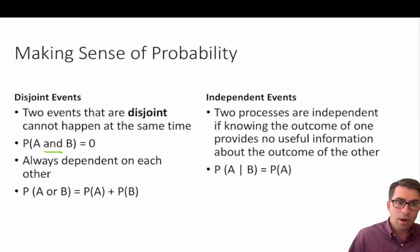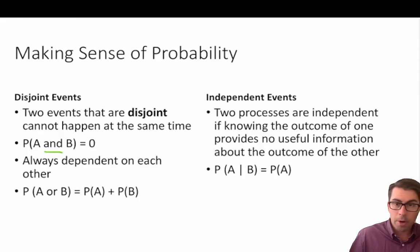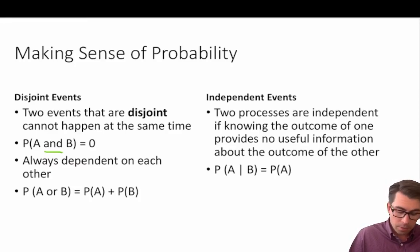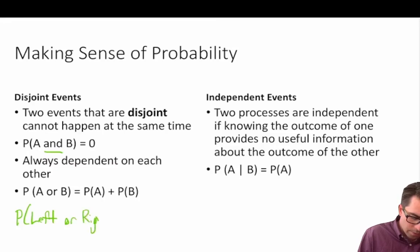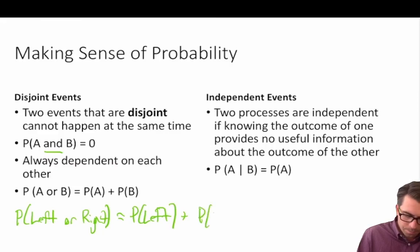When writing the probability equation for disjoint events, the probability of A or B — so the probability of left sock or right sock first — is simply equal to the probability of A plus the probability of B. We can write this as: the probability of left or right equals the probability of left plus the probability of right.